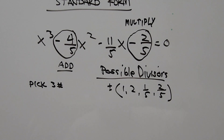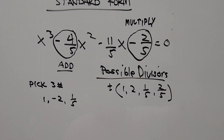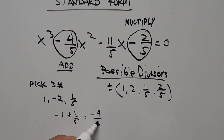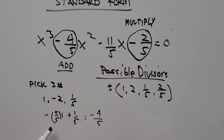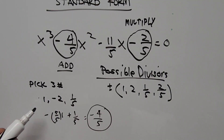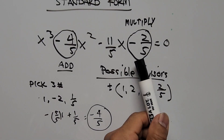The equivalent of negative 4/5 comes from 1, negative 2, and 1/5. Adding these: 1 minus 2 is negative 1, plus 1/5 gives negative 4/5 (since 1 = 5/5, so negative 5/5 + 1/5 = negative 4/5). Multiplying all three: 1 × (negative 2) × 1/5 = negative 2/5, which matches our constant term.